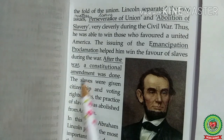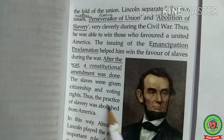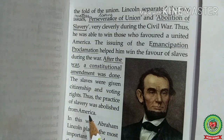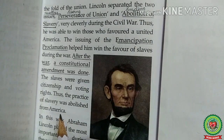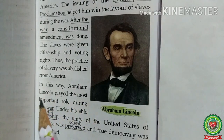After the war, a constitutional amendment was done — amendment means a formal or official change made to a law or the Constitution. The slaves were given citizenship and voting rights, and thus the practice of slavery was abolished from America. In January 1865, Congress proposed an amendment to the Constitution to abolish slavery in the United States, and on December 18, 1865, Congress ratified the 13th Amendment, formally abolishing slavery.